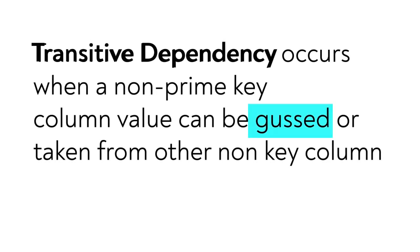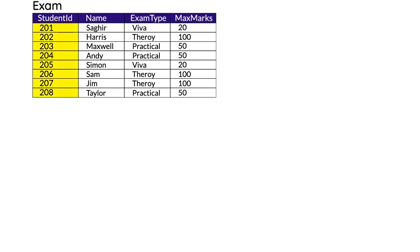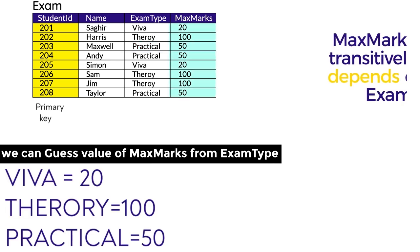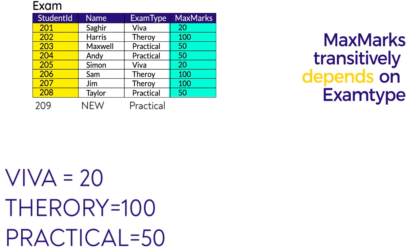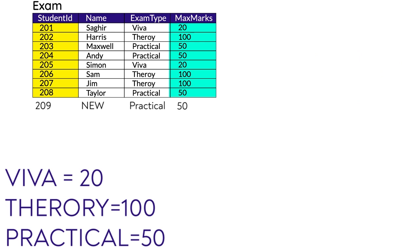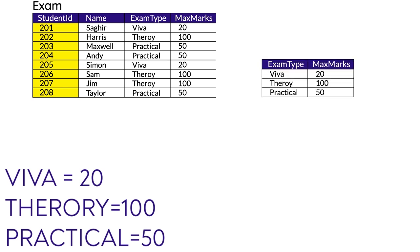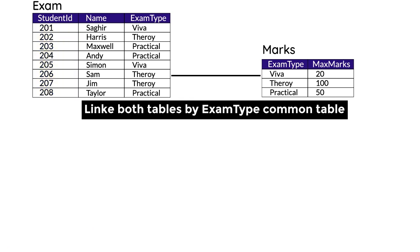Transitive dependency is when one non-key column can be guessed from another non-key column. In this table, student ID is the primary key and all other columns are non-prime keys. Maximum marks can be guessed from the exam type column — if we already know a student is opting for viva, it's 20 marks; theory is 100 marks; practical is 50 marks. So if a student with ID 209 is opting for theory, we already know it will be 100 marks. This is called transitive dependency — maximum marks is transitively dependent on exam type. In this case, we break the table and take the transitive part away to make another table, then link them both.